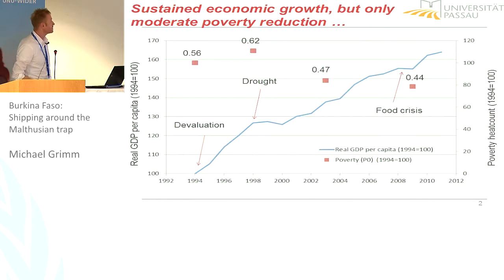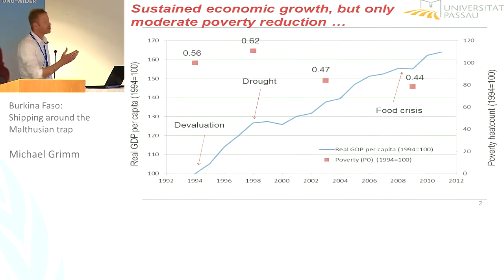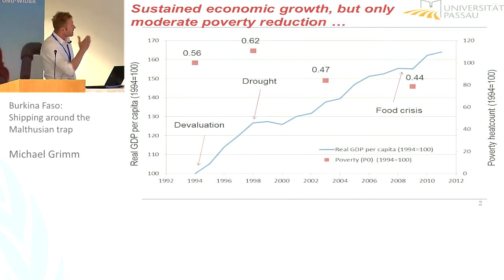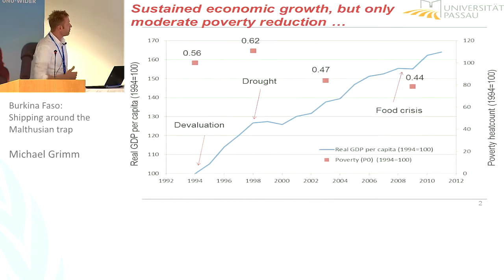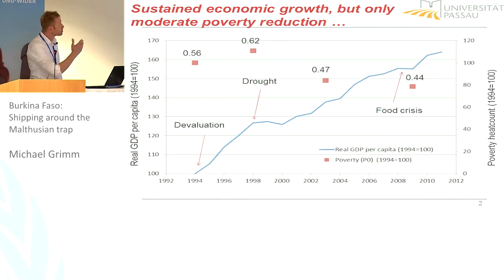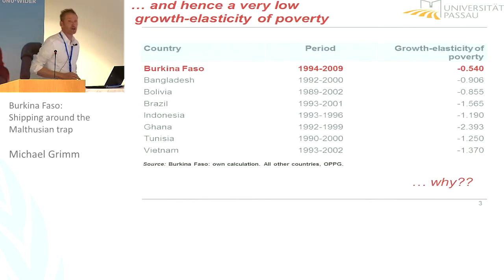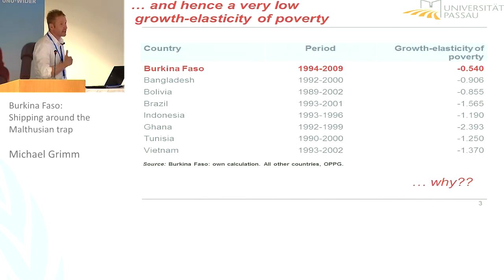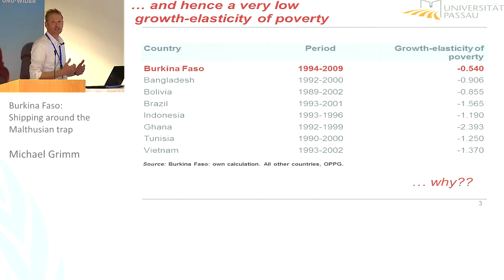So you would expect quite substantial poverty reduction. If you look at the poverty headcount — these are the red boxes — you see that in the beginning it's increasing, mainly due to a drought, because the 1998 survey was done right after that drought. Then to 2003 it's declining, but also not too impressive — after all, it's almost 10 years. And looking further to 2009, you see a mild decrease in poverty. Compared to GDP, that's not so impressive. Indeed, if you compute the gross elasticity of poverty, you'll find a value of minus 0.5. By international standards, we are definitely at the lower tail of the distribution. So the question is: why do we see this low elasticity?